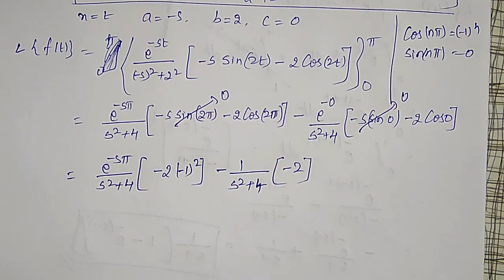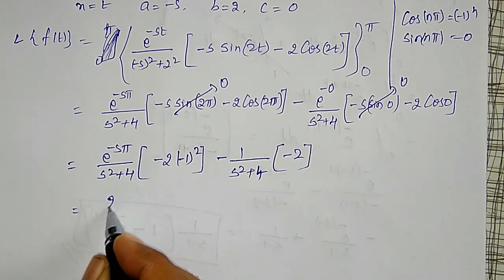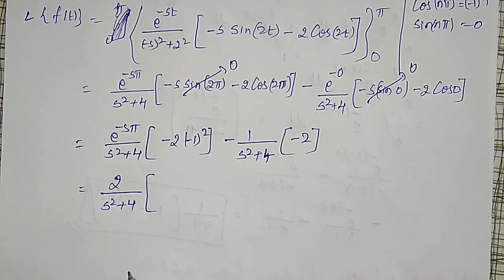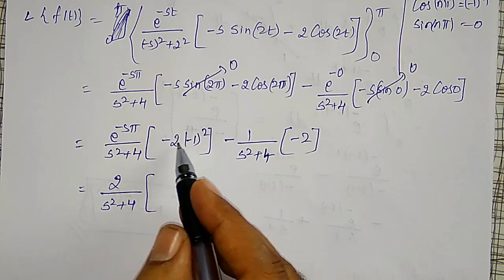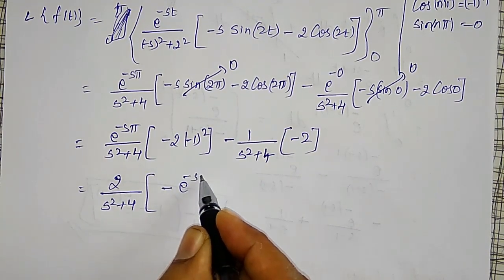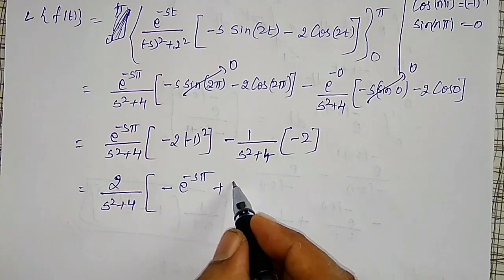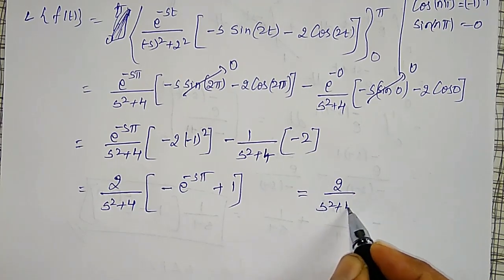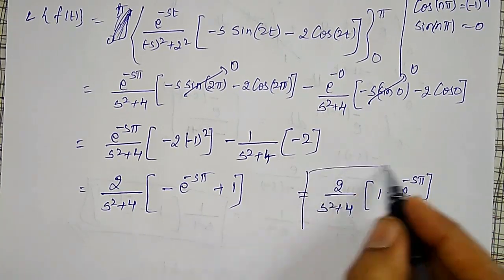After simplifying, taking 2/(s² + 4) common, the required Laplace Transform is 2/(s² + 4) · (1 − e^(−sπ)). This is the final answer for the Laplace Transform of sin(2t) defined as a discontinuous function on [0, π].